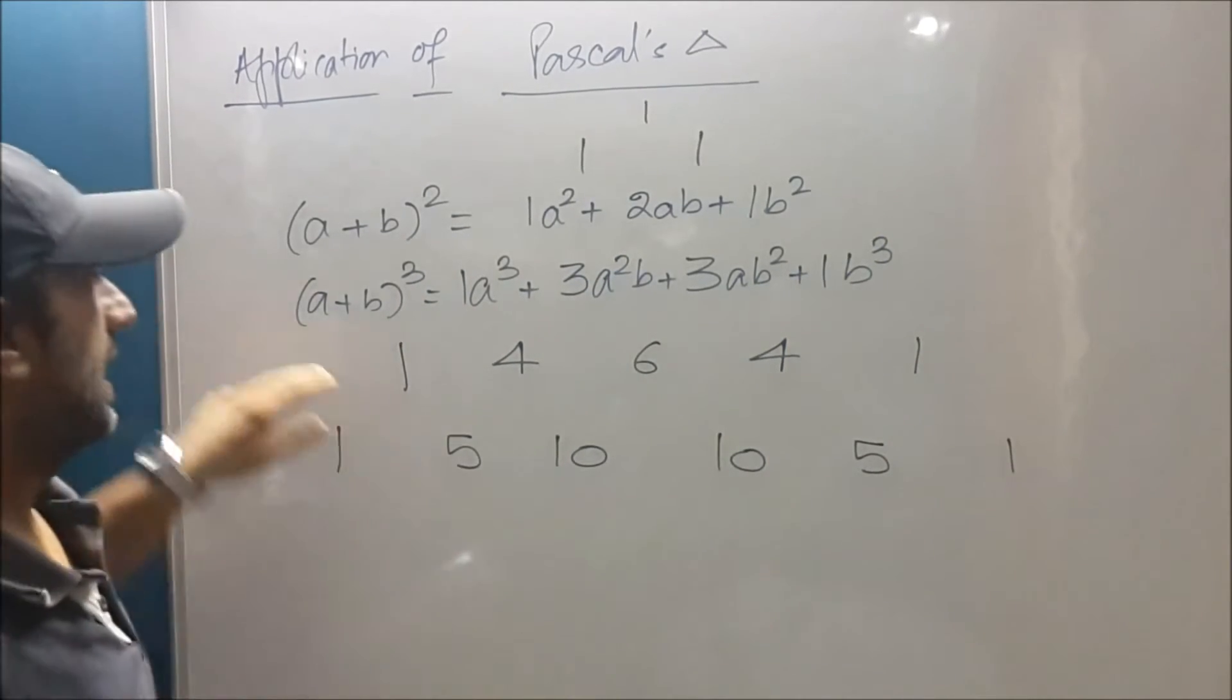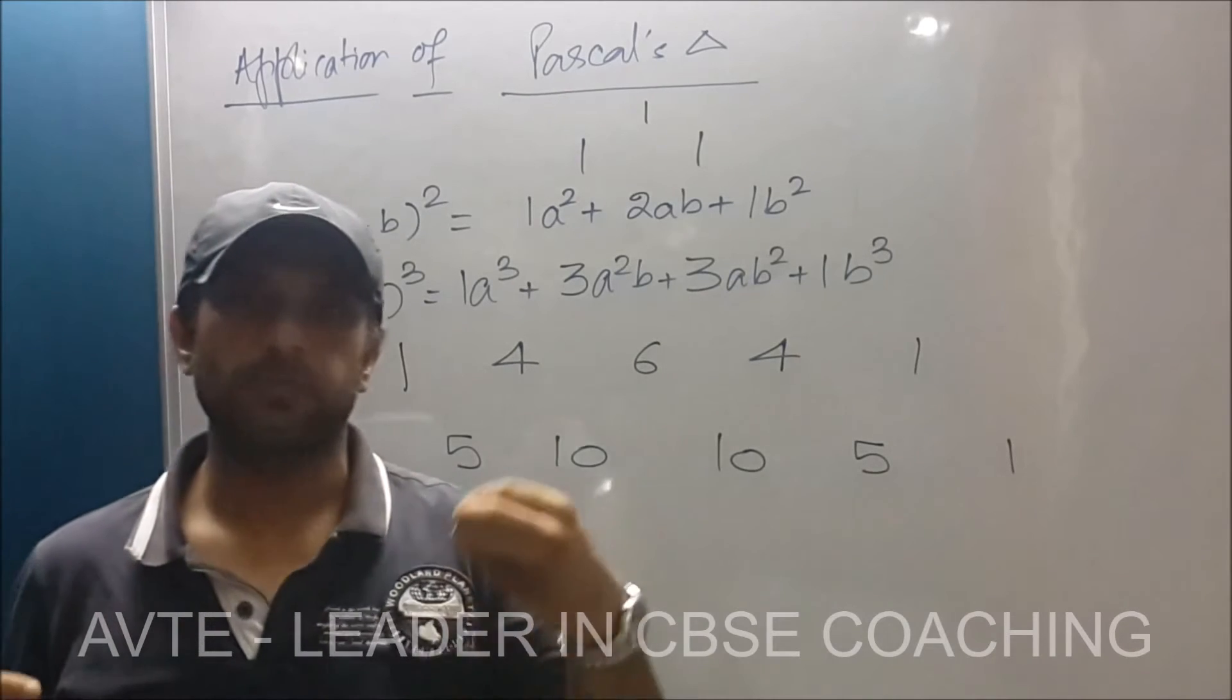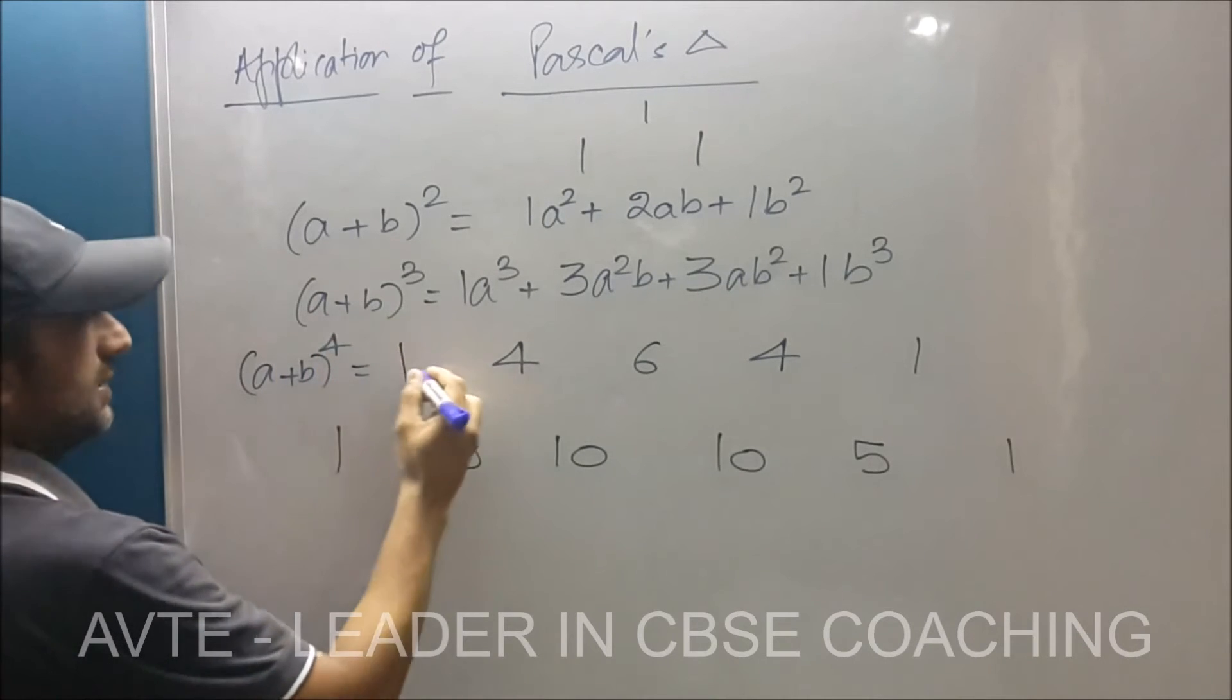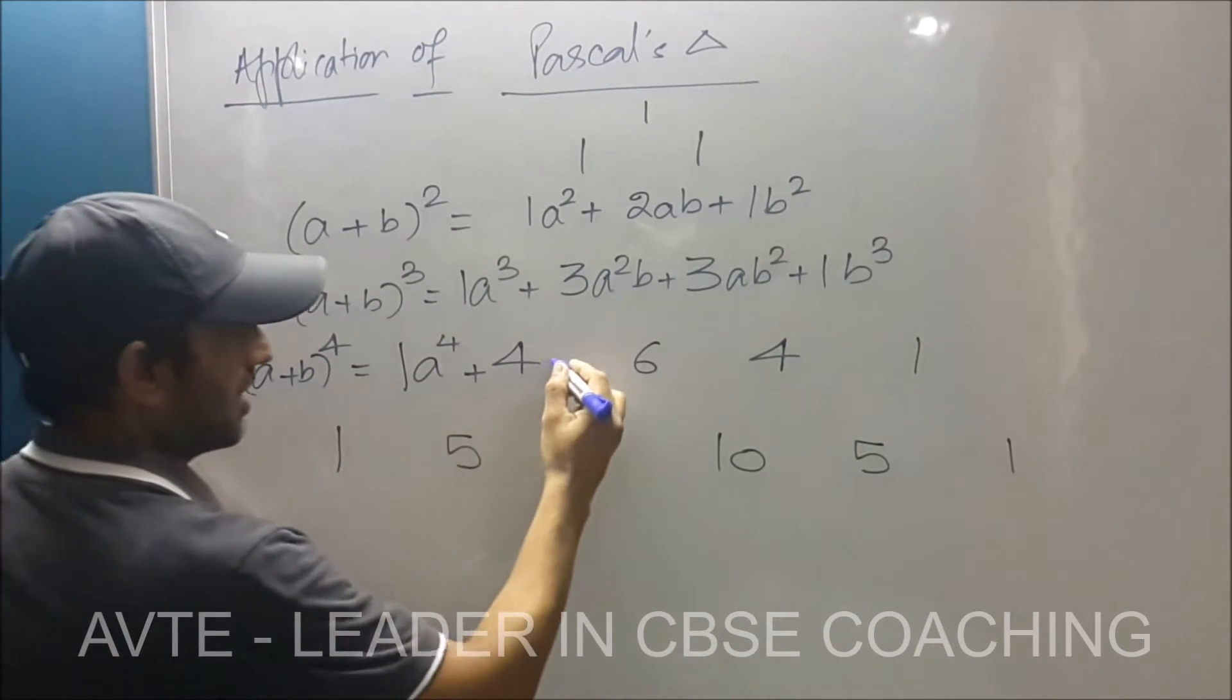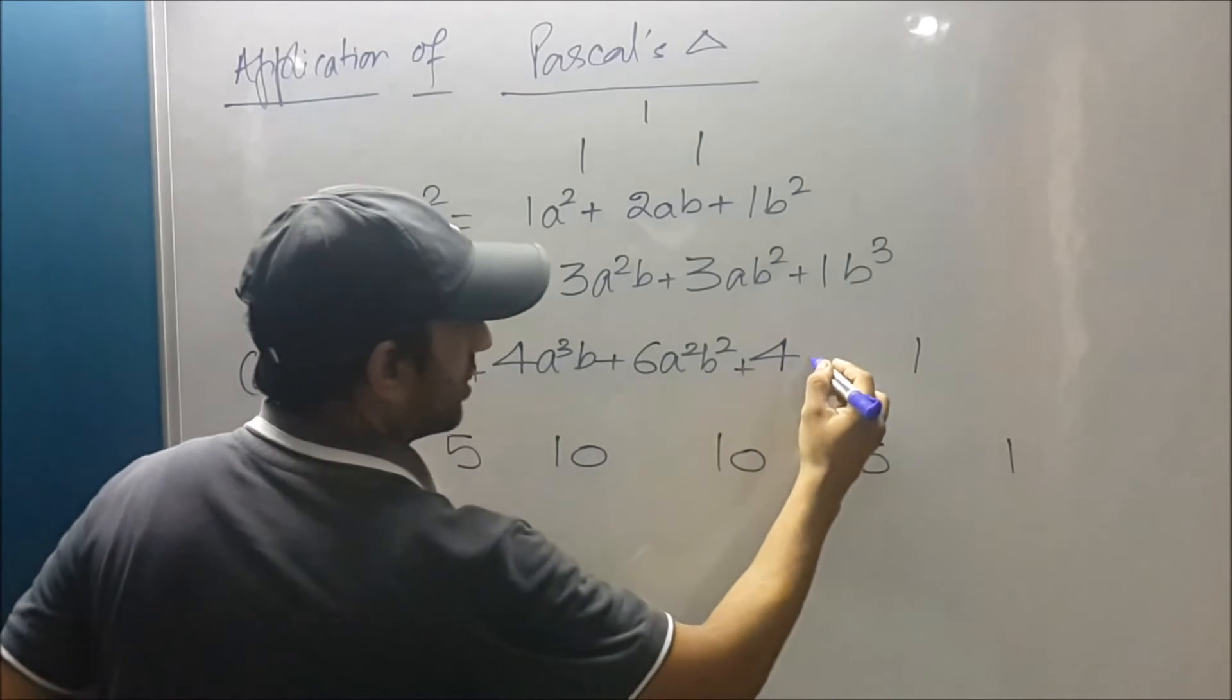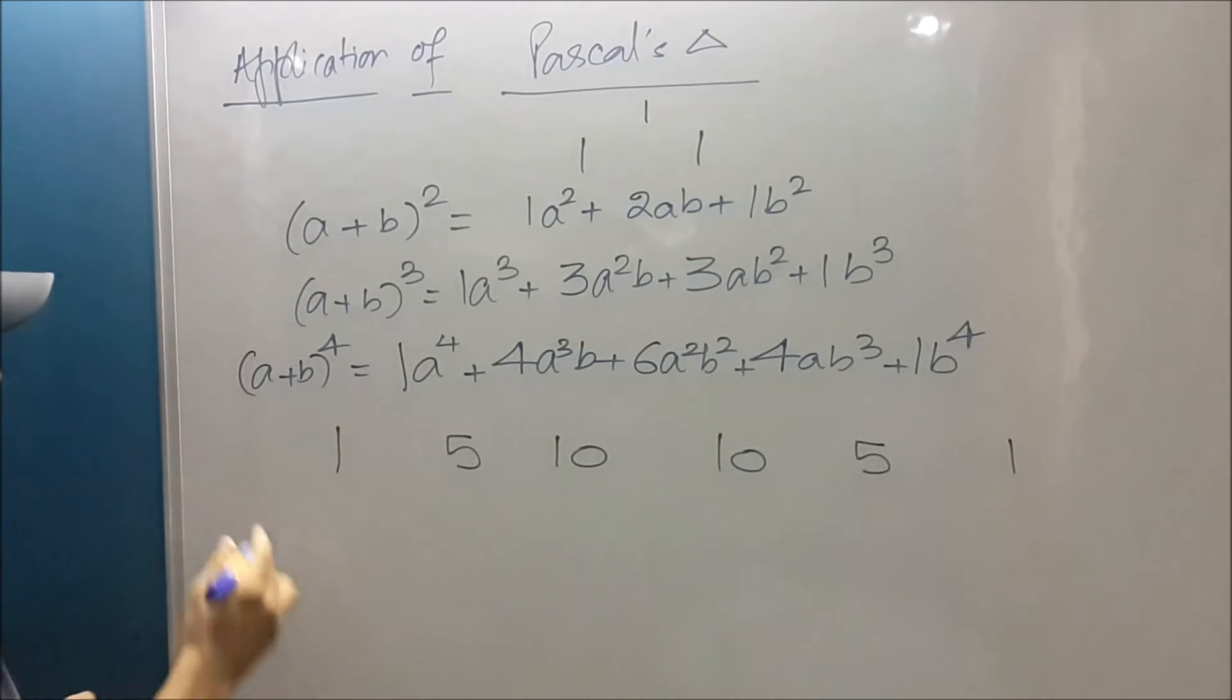Now you will say wow. The major application is coming because fewer people remember (a + b) raised to power four and five. So (a + b)⁴ is, say with me, a⁴ + 4a³b + 6a²b² + 4ab³ + b⁴.